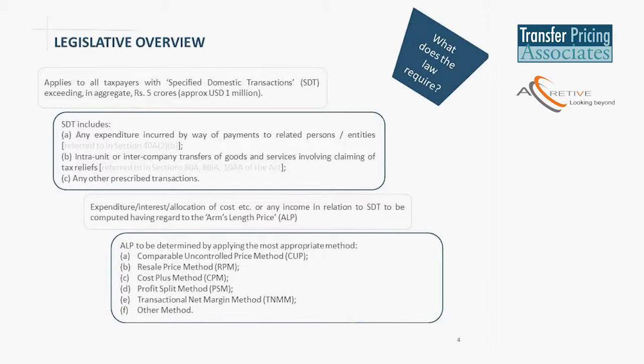The other interesting thing in the Indian context is the introduction of what is referred to as the 'other method,' a residuary method which provides that you need to determine the arm's length price with any form of data based on which you could conclude what is the price to be charged or has already been charged. Typically, situations where we would rely on valuation reports — those valuation reports could be construed to determine the arm's length price under this category.